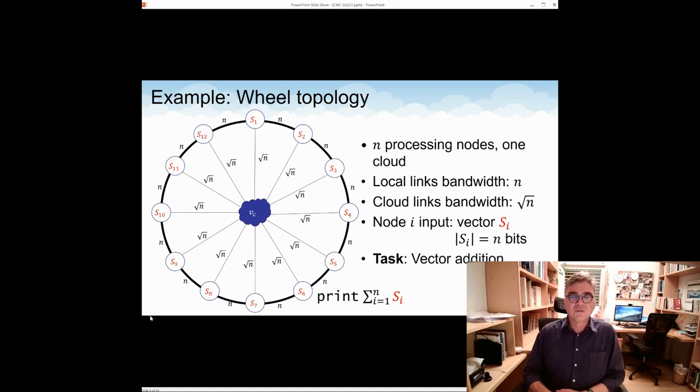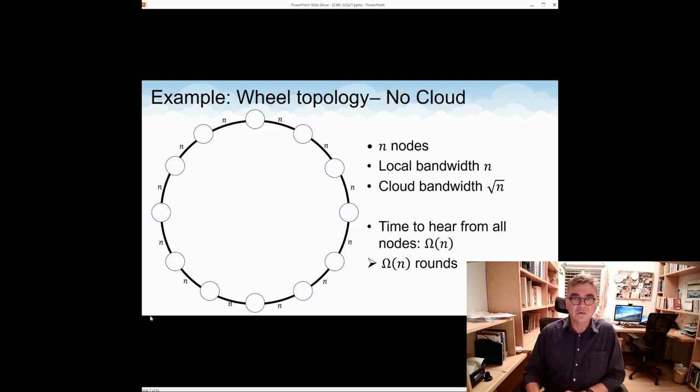And now let's look at a few ways to solve this problem. We start with a naive solution, which does not use the cloud. It uses only the ring. No cloud, only the ring. We can obviously compute the sum of the vectors over the ring. But the problem is that it takes a long time. The ring has n nodes. So even if we have, regardless of the bandwidth of the ring links, the time to cross the link for the ring from one side to the other is omega of n rounds. It's just the diameter of the ring. So there's no way to compute the sum of all vectors without using the cloud in less than omega of n rounds. So this is one thing to remember.